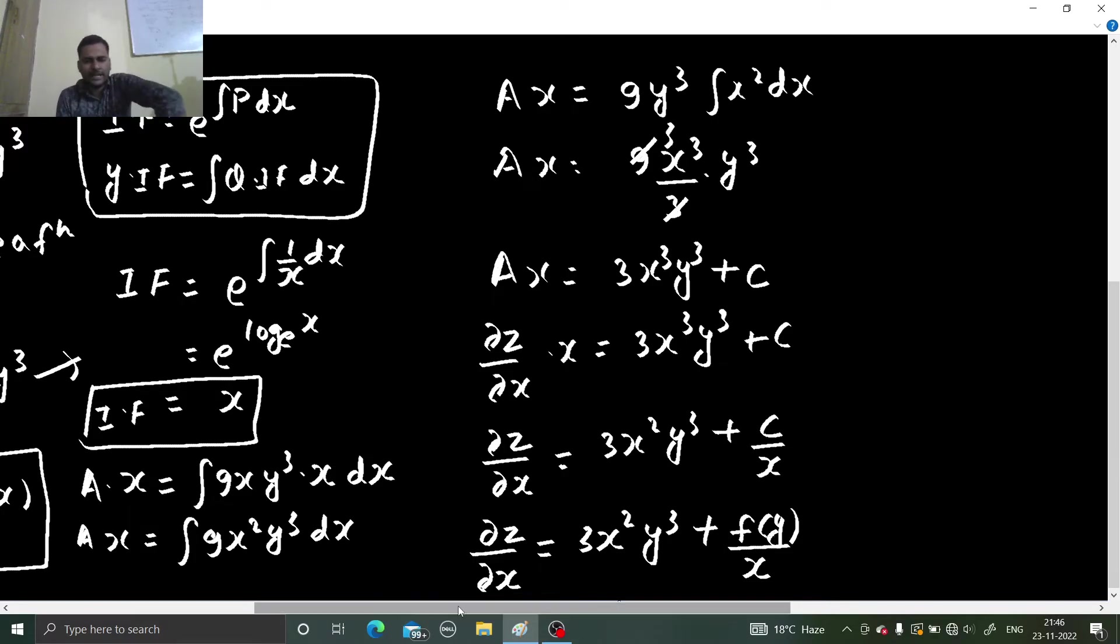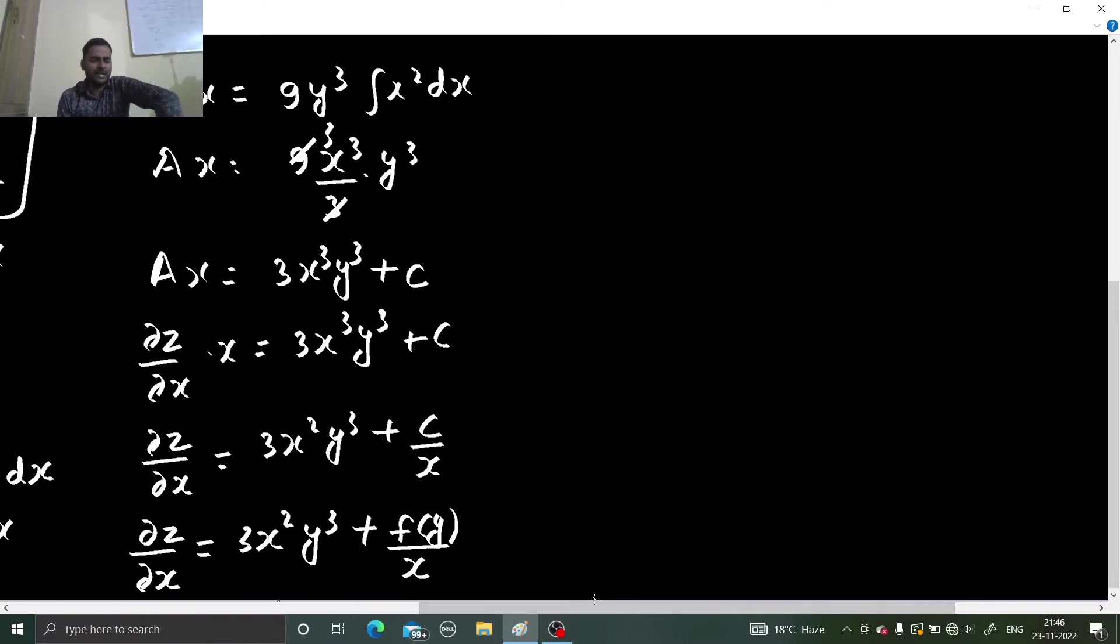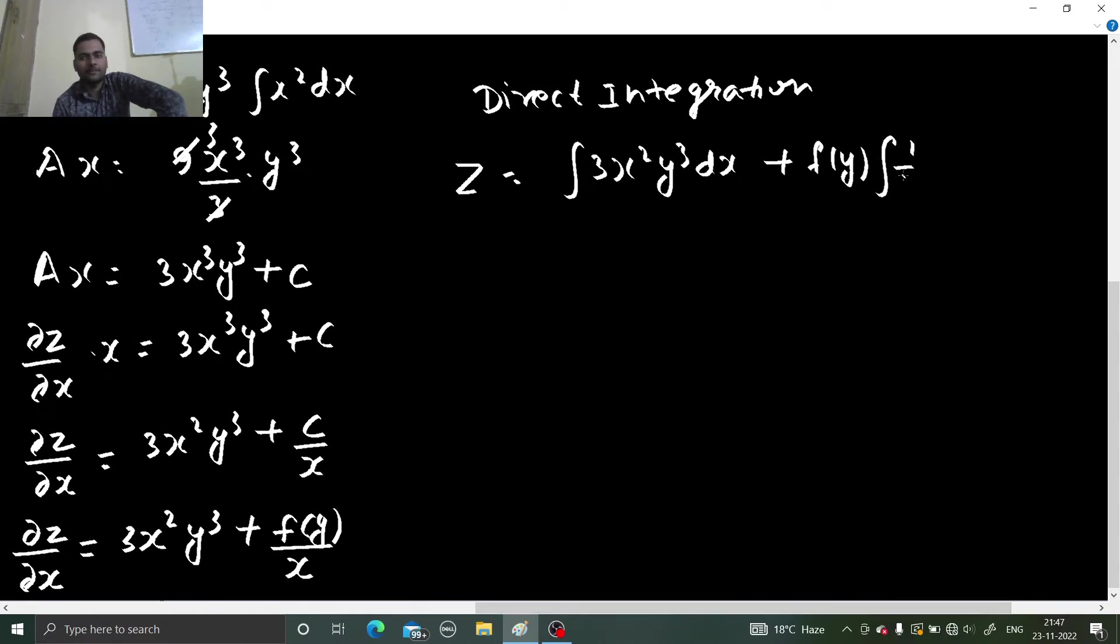Clear. Now direct integration. I hope you are clear with that. If you want to extract z from here, go for direct integration. So we will integrate partially with respect to x. You will get z equals integral 3x square yq³ dx plus f of y outside and integral of 1 by x dx. Because you are doing partial with respect to x, the constant which will come will be a function of y. Integration partially with respect to x, constant is a function of y.